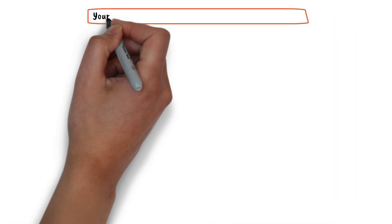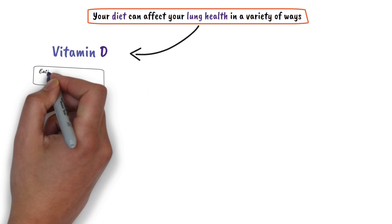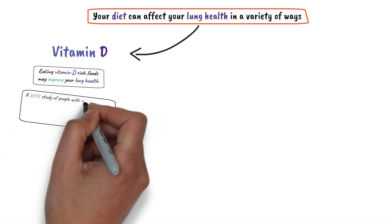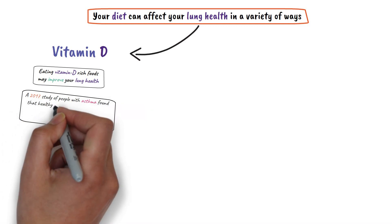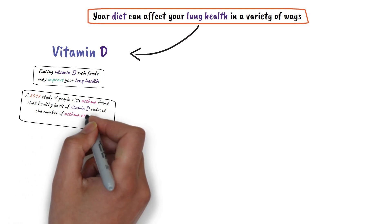The seventh way that you can clean your lungs is by changing your diet. Your diet can affect your lung health in a variety of ways. Eating vitamin D-rich foods may improve your lung health. A 2017 study of people with asthma found that healthy levels of vitamin D reduced the number of asthma attacks that required corticosteroid treatment.